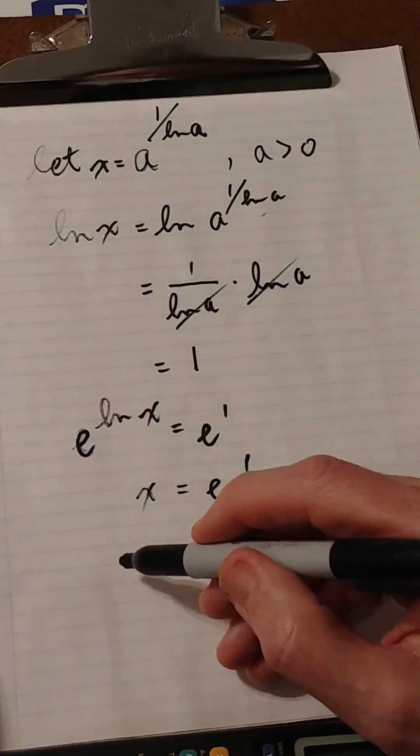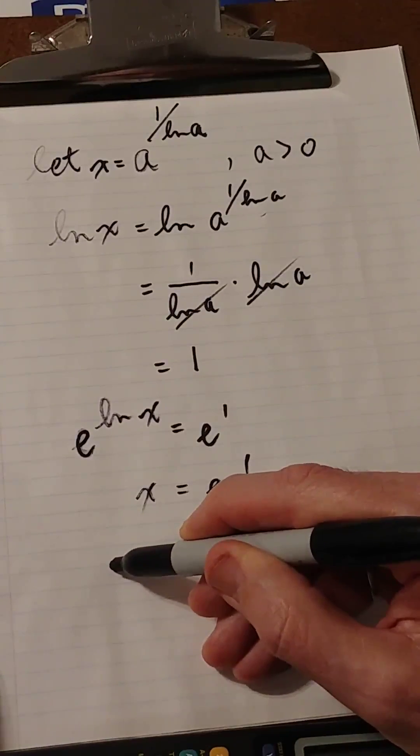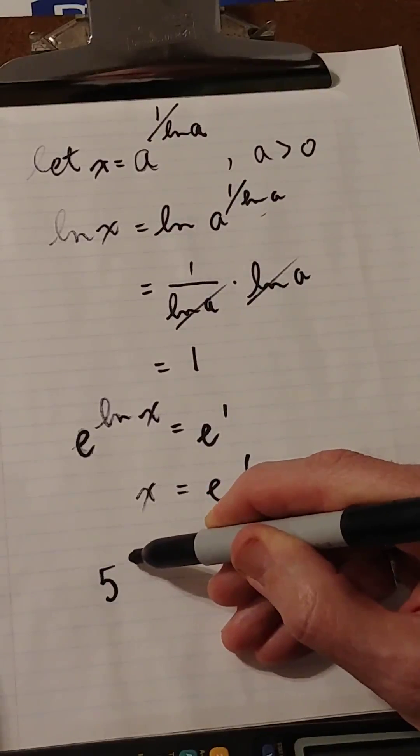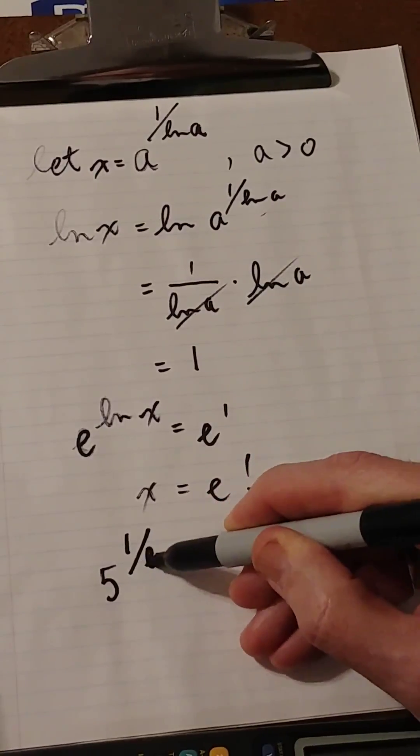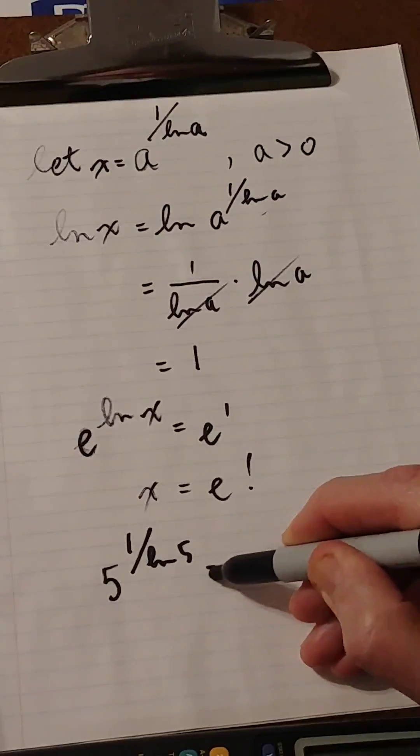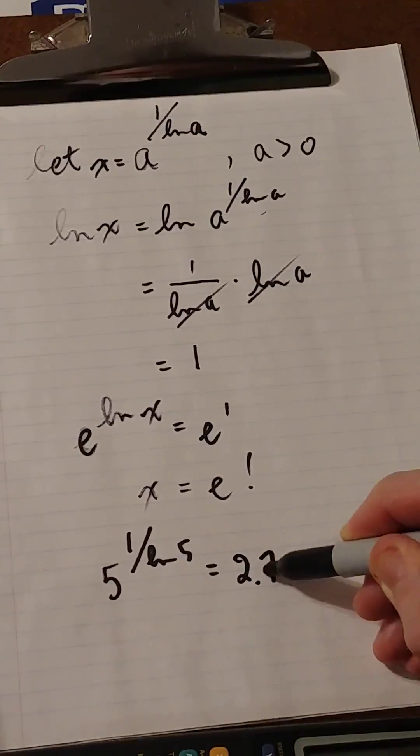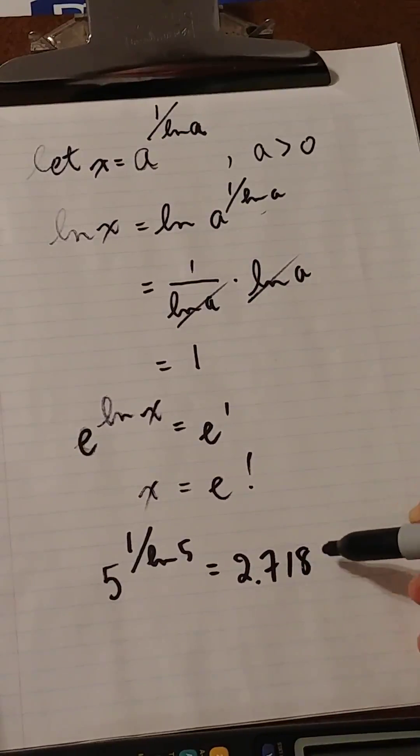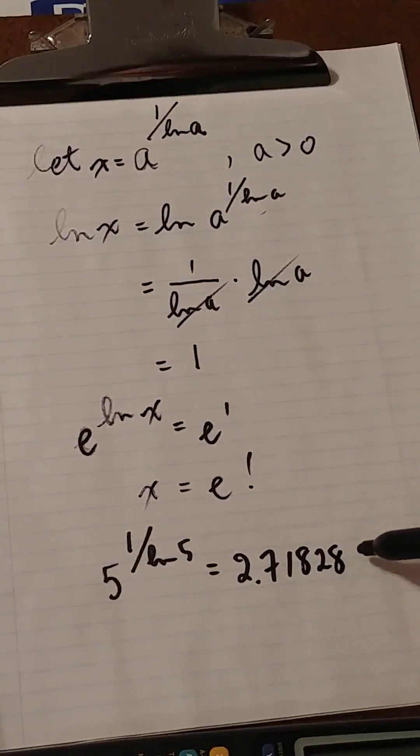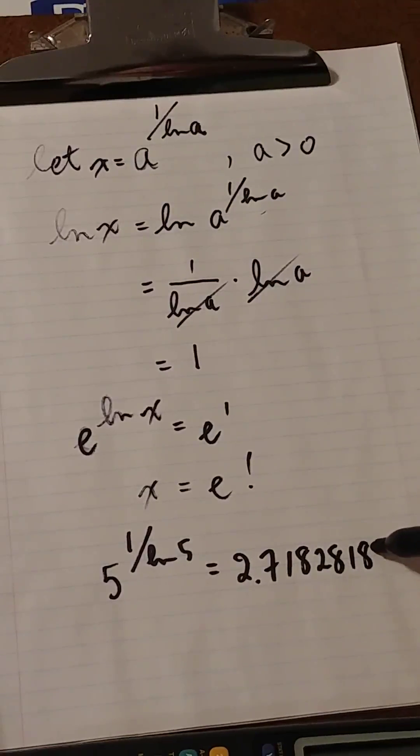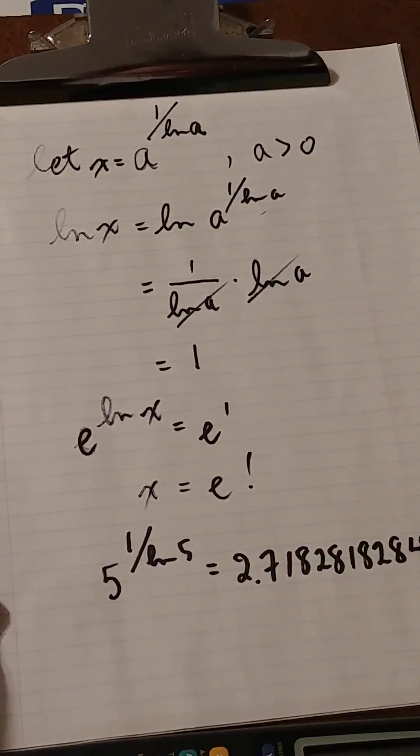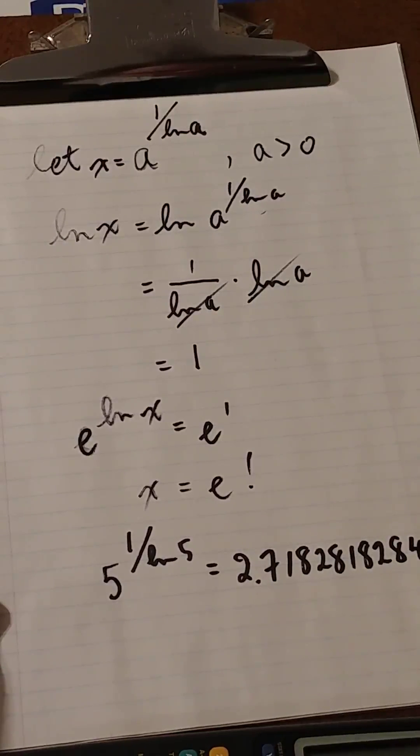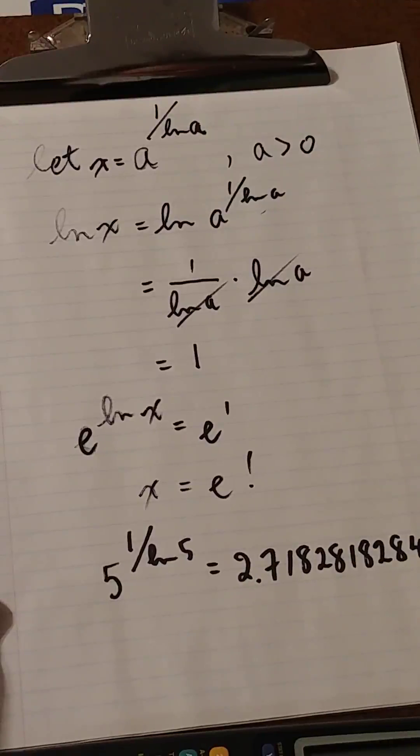If you want to verify that, you can, for example, use your calculator to calculate 5 to the 1 over ln 5. And you will get 2.7, 1, 8, 2, 8, 1, 8, 2, 8. And then just when you think it's going to repeat, 4, 5, 9, 0, 4, 5, etc. Which is an irrational number, just like pi.